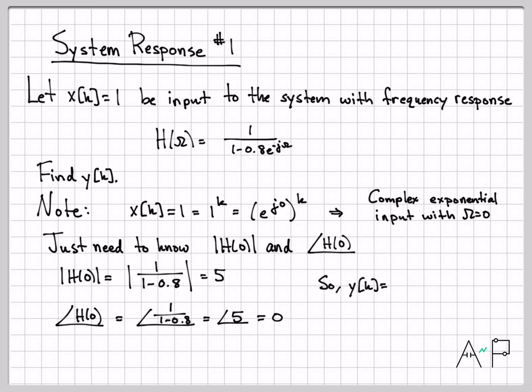So I now know how my system changes both the amplitude and phase of the input at this frequency. So I can go ahead and write down what my output is. Y of k is my original input, one into the k times the amplitude response.